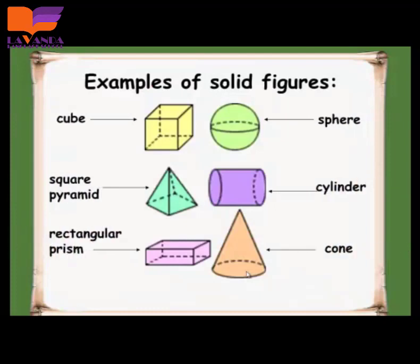Those are some examples of solids or three-dimensional shapes. The first one is the cube, square pyramid, rectangular prism, sphere, cylinder, and cone. We have to know them very well.